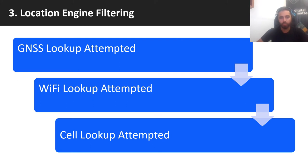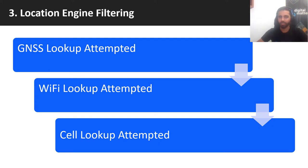Once we send this raw data off to the location engine, the location engine will attempt to do lookups in this order: it'll try a GNSS lookup first. If it's successful, it will just use that. If we couldn't get one, Wi-Fi, and so on to cell. This is the order from most accurate to least accurate. If GNSS is available, we definitely want to be using that — it's a little bit more accurate than Wi-Fi or cell.